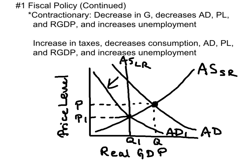In the ADAS model, the aggregate demand and short-run aggregate supply are showing inflation. As a result of the contractionary fiscal policy — the increase in taxes or decrease in government spending — AD shifts to the left, and therefore full employment is restored.